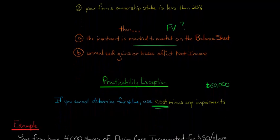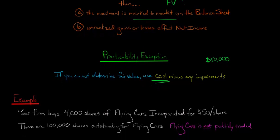So let me give you an example. Let's say that your firm buys 4,000 shares of Flying Cars Incorporated for $50 a share. And there are 100,000 shares outstanding of Flying Cars. So you've bought a 4% stake. So normally this would go for the fair value method, because you have less than 20%. So you'd mark it to market on the balance sheet.